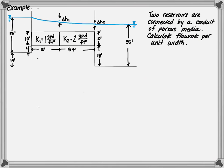So let's test this out with an example. We're given two reservoirs that are connected by a porous media. Calculate the flow rate per unit width. Reservoir one is 50 feet, reservoir two is 55 feet, and reservoir one is 14 feet higher than reservoir two. The media in reservoir one is 4 feet from the bottom, while in reservoir two it's 18 feet from the bottom. The media itself that the water will flow through is 10 feet high.